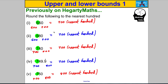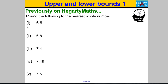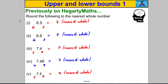Look at all these numbers that rounded to 700 — they start at 650 and they end at 749.9 recurring. Any number between those two rounds to 700. But if you're just a tiny bit more than 749.9 recurring, i.e. 750, you round up to 800. Similarly, any number from 6.5 all the way up to 7.49 recurring rounds to 7, but at 7.5 you round up to 8.